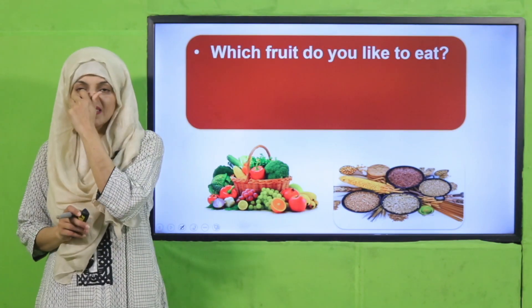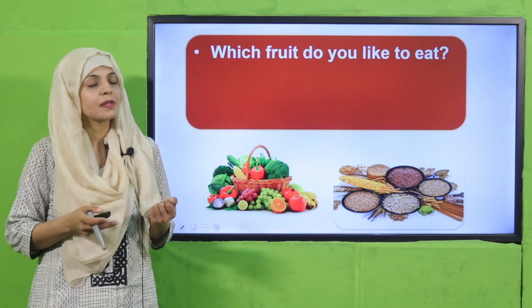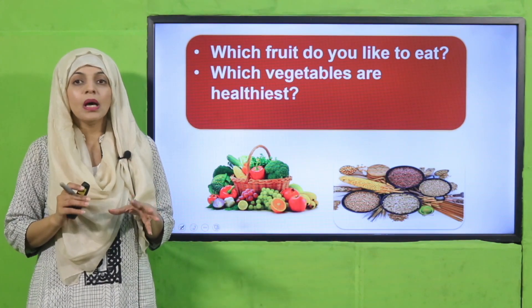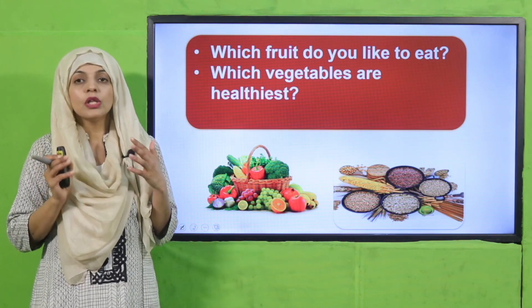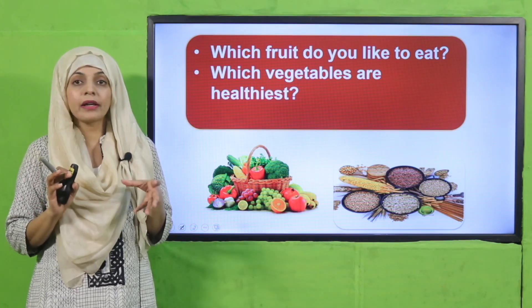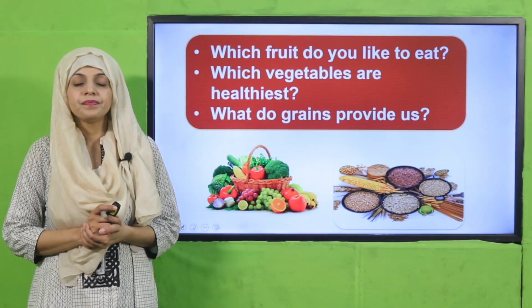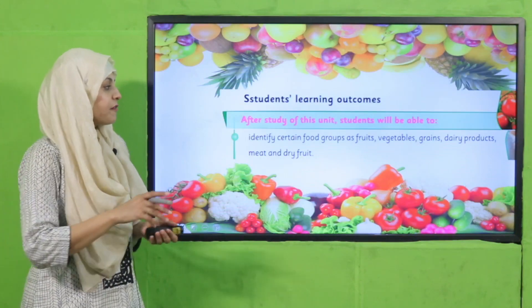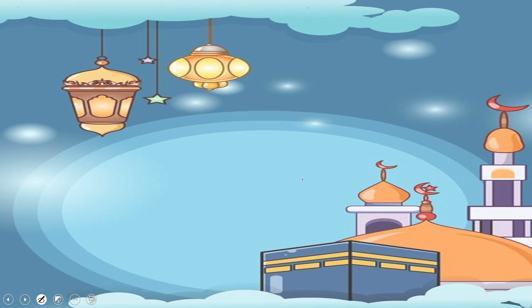Let's quickly start with an activity on fruits, vegetables and grains. Which fruit do you like to eat? I like mangoes, watermelons, oranges and apples. Quickly tell me which vegetables are healthiest — all vegetables are very good for our health. What do grains provide us? They provide us with lots of energy because they have carbohydrates. Today we will identify certain food groups as fruits, vegetables and grains.